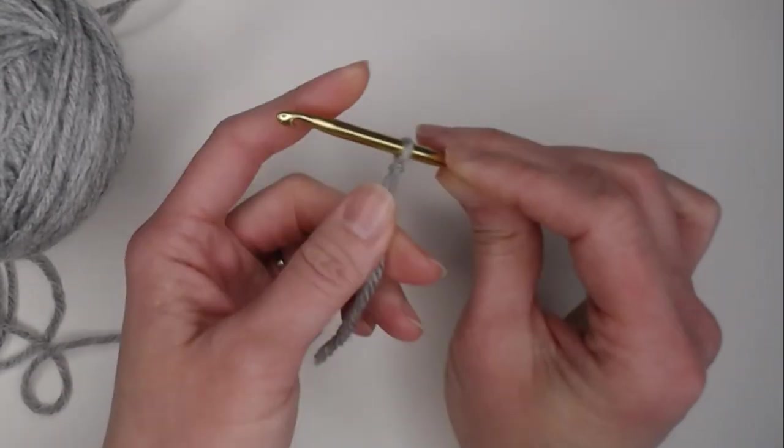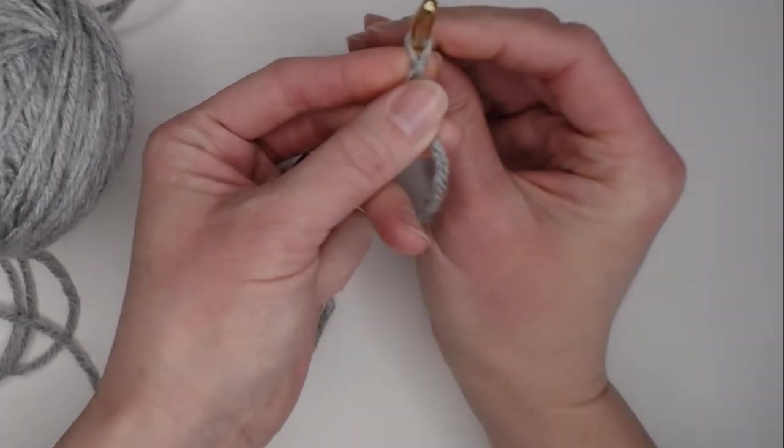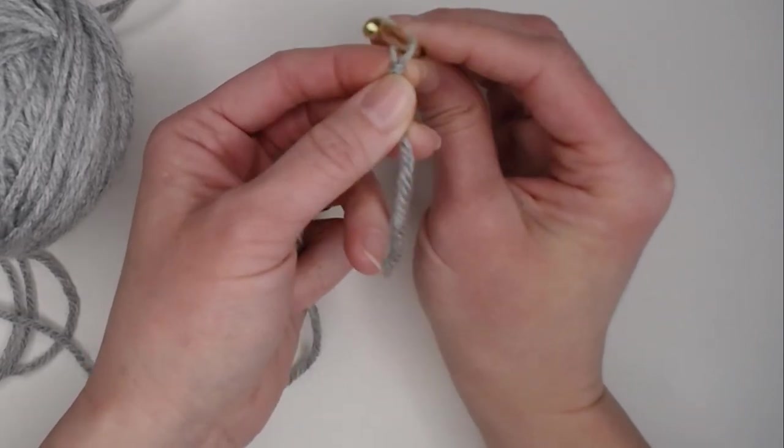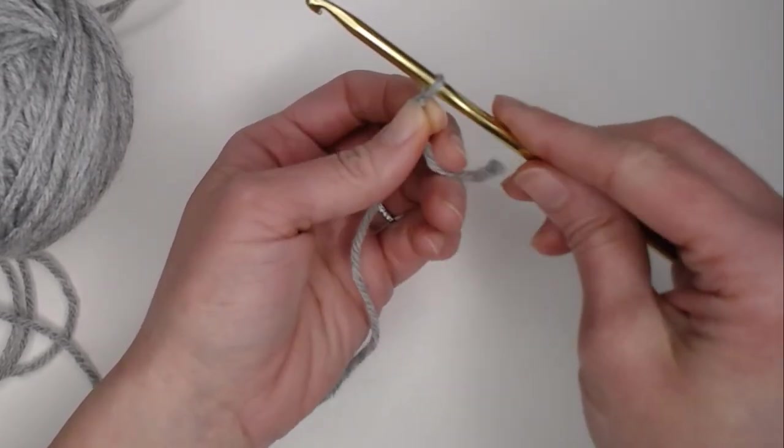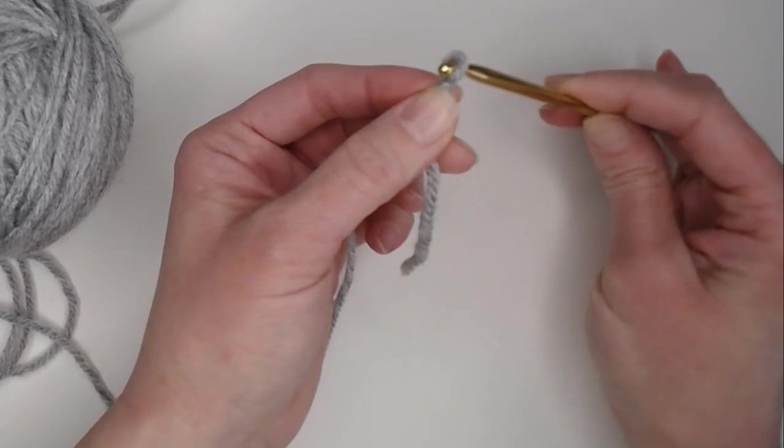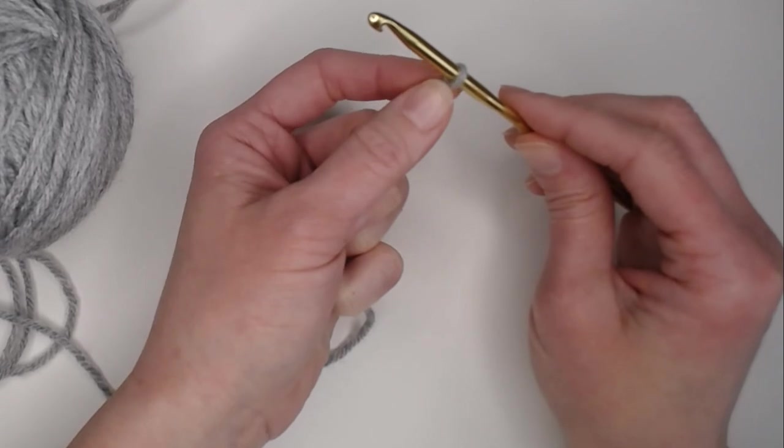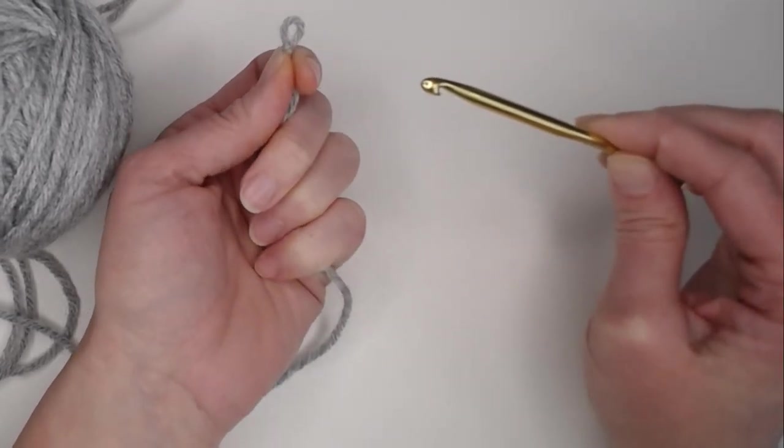The second thing I want you to look at is if you point the crochet hook towards you, but just look at the yarn, the loop that's on your hook, it takes the shape of a teardrop. You want to always have the claw part of your crochet hook facing down towards the bottom point of the teardrop. If the claw part is faced down towards the bottom part of the teardrop, your crochet hook will glide smoothly through that loop.